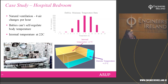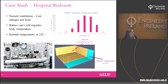Another interesting thermal comfort project involved a hospital bedroom. For this design it was hoped that natural ventilation rather than mechanical ventilation could be used — windows would open and close, providing the four air changes per hour required for fresh air. It was particularly important to maintain a minimum temperature of 22 degrees Celsius, as babies are not good at self-regulating body temperature.